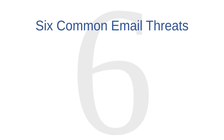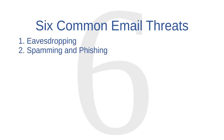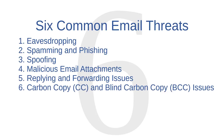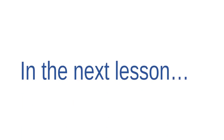That's all for now about email security. In this lesson, we covered six email threats: eavesdropping, spamming and phishing, spoofing, malicious email attachments, replying and forwarding issues, and carbon copy and blind carbon copy issues. In the next lesson, we're going to start learning about malicious software, or malware. Computer viruses are one example of malware, but as you're about to see, viruses aren't the only kind of malware that can infect your computer.